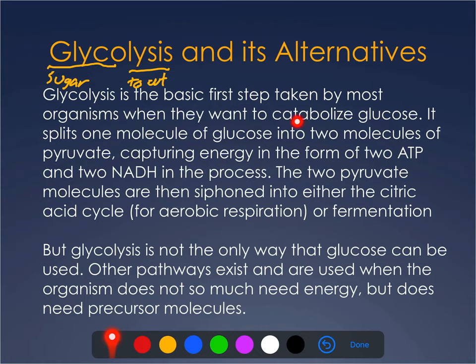Basically, what's going to happen is we're going to split one molecule of glucose — it's usually glucose, though it can be other sugar molecules, but glucose is the most traditional, the most studied, the one most organisms prefer to use. This molecule of glucose is going to be slowly and through a multi-step process split into two molecules of pyruvate. This is what we call an exergonic reaction, which means that it releases energy. And that energy can be captured and stored in the form of ATP. In addition, it's going to yield four high-energy electrons, which will be stored on NADH.